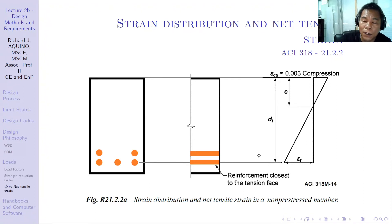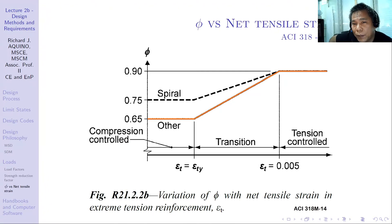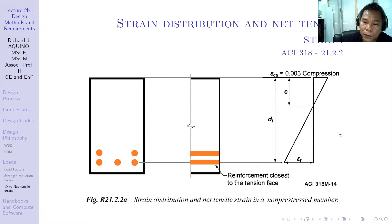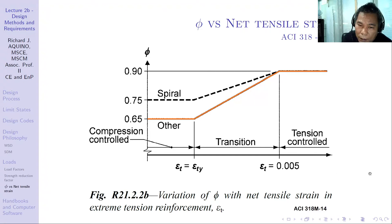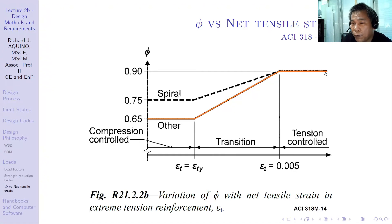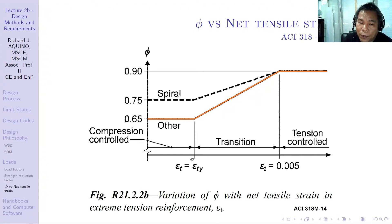The net tensile strain εt is very important in determining the strength reduction factor phi. According to ECI, if εt is equal to 0.005 or greater, phi equals 0.9 — this is the tension-controlled section, which is where beams are classified. If εt is equal to εty or lower, it is a compression-controlled section — columns are normally classified here, with phi equal to 0.65.